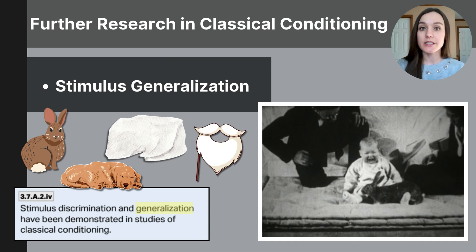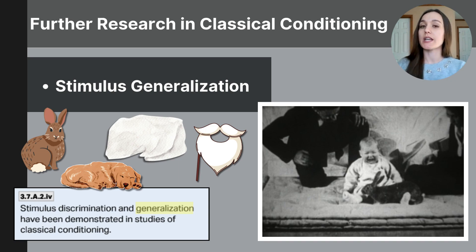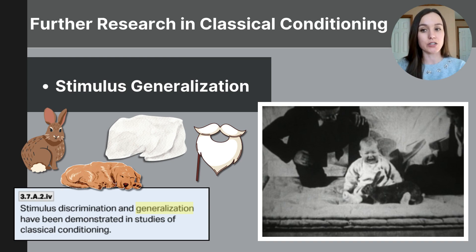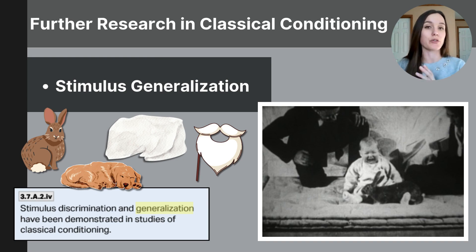In their study, Watson and Rayner were able to demonstrate two important concepts: stimulus discrimination and stimulus generalization. Stimulus generalization is when, after conditioning has occurred, the subject produces the conditioned response to objects that are similar to the conditioned stimulus. Watson and Rayner introduced Little Albert to other objects that resembled the white rat to see if his conditioned fear extended beyond just the white rat.